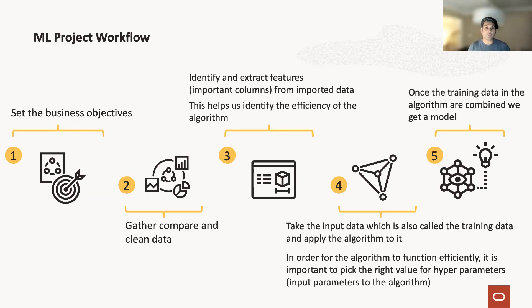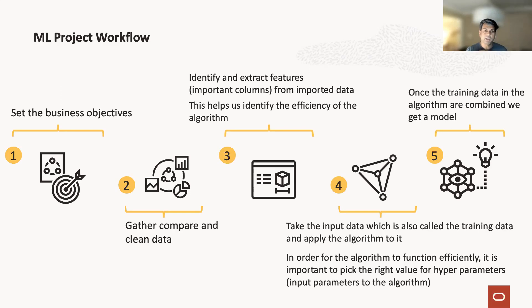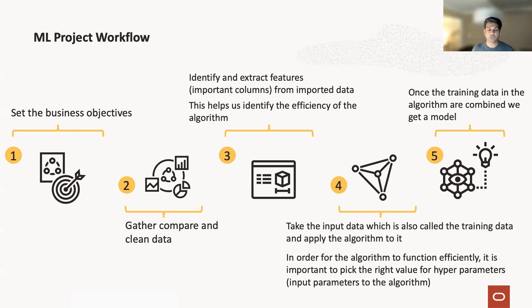The third step is to extract features — features are columns. Imagine writing a select query: how many columns should you have, what kind of query plan will that drive? The same way, when determining the efficiency of an algorithm, the more columns you have from imported data, the longer the model takes to converge. A smaller number of columns helps drive the efficiency of the algorithm much better.